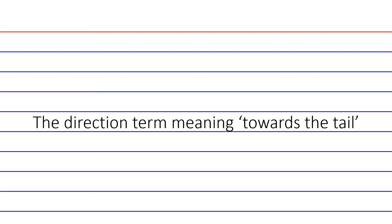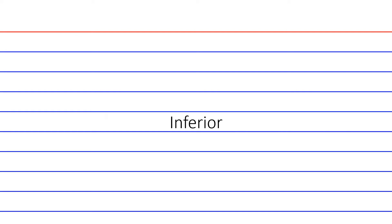This is the directional term meaning towards the tail. Before we really get going, I want to give a disclaimer: these directional terminology terms and whether or not some of these words are interchangeable is purely in regards to human anatomy. A lot of these terms can change in four-legged organisms like dogs or cats. The answer to towards the tail is inferior.